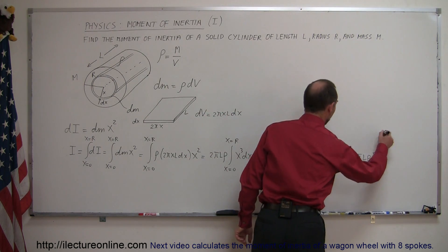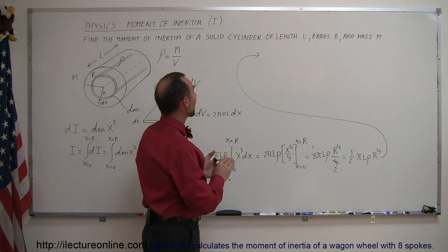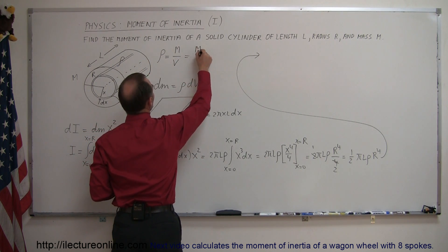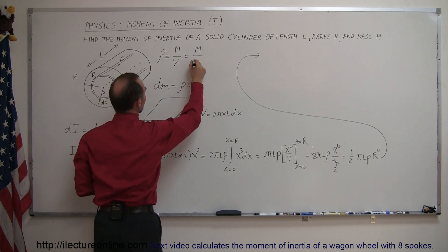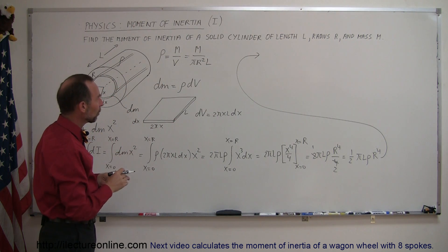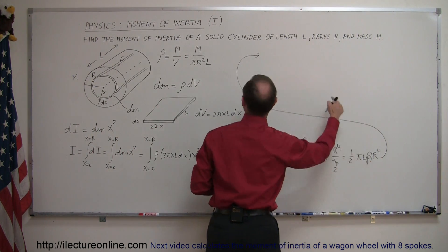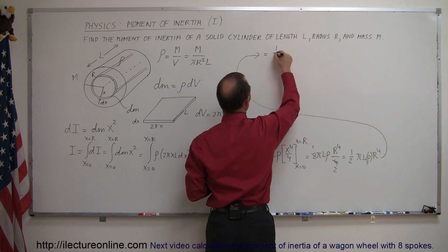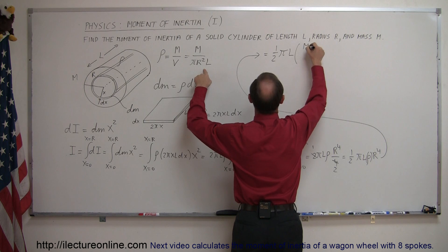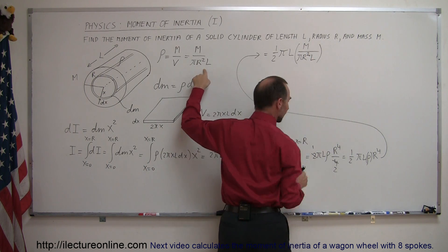We want to express this in terms of mass and radius. The density rho equals M over the volume, and the volume of the cylinder is pi R squared times L. So we replace rho with M over pi R squared L. This gives us one half times pi times L times M over pi R squared L, times R to the fourth.